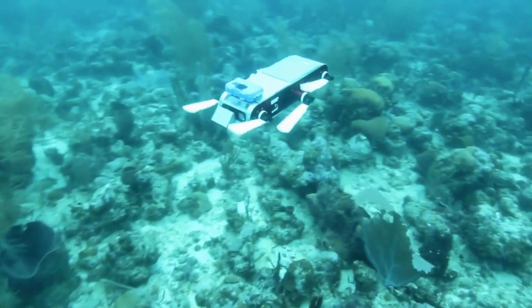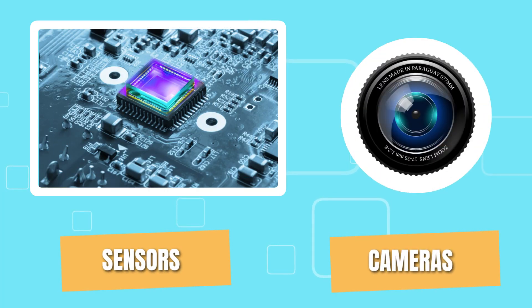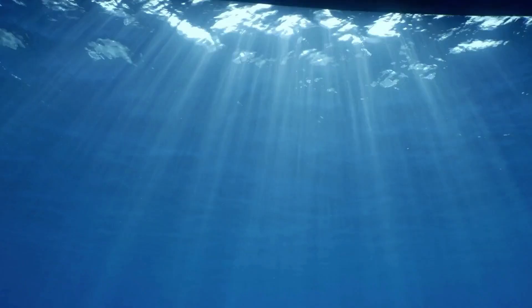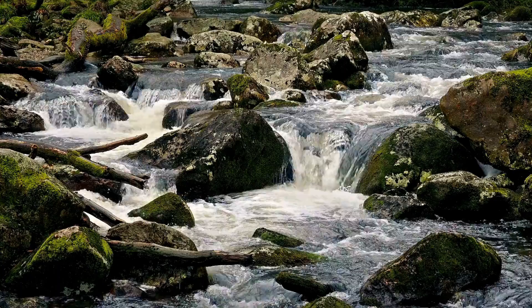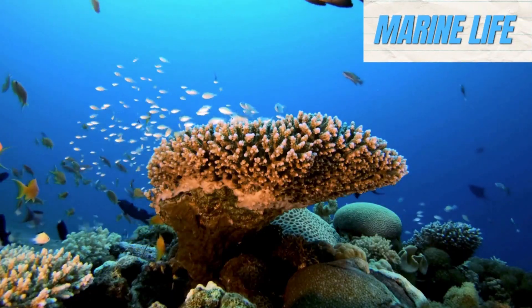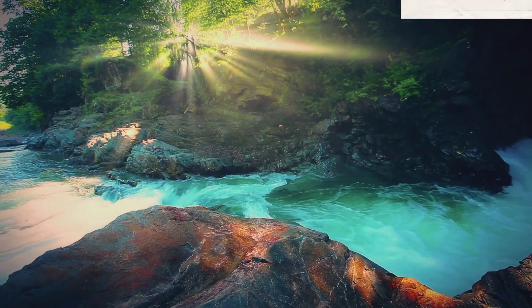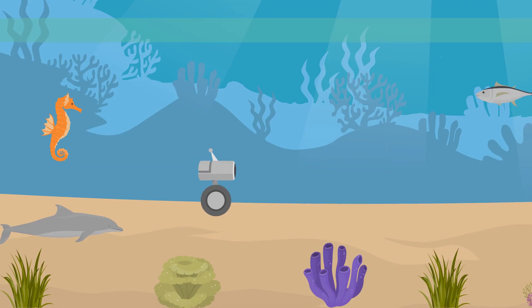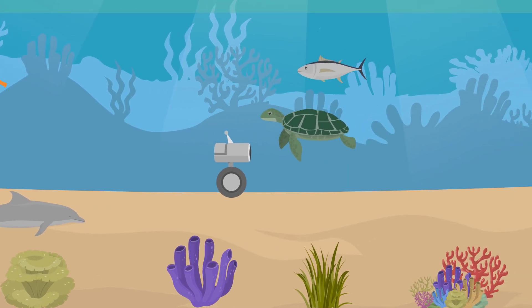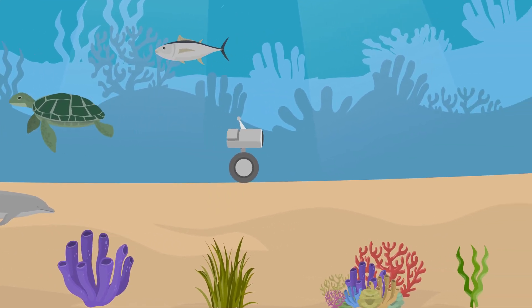Lastly, swarm robotics can be employed in the field of underwater exploration. Equipped with sensors and cameras, swarm robots can navigate the depths of our oceans, lakes, and rivers, gathering data on marine life, geological formations, and water quality. This information can then be used to better understand and protect these underwater ecosystems.